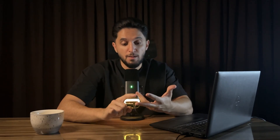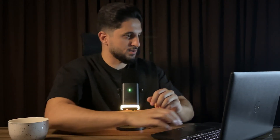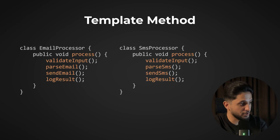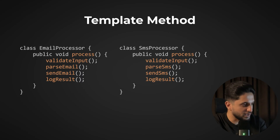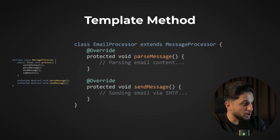The fourth pattern is used everywhere — from Spring's lifecycle hooks to Angular component lifecycle hooks and even in JUnit. It's called the template method pattern. At its core, it defines a certain algorithm but allows subclasses to override specific steps without changing the rest. Without it, you duplicate the algorithm structure in every implementation. With the template method pattern, you define the algorithm once in an abstract class and let subclasses customize specific steps like parseMessage and sendMessage, while shared steps like validateInput and logResult are implemented in the abstract class.